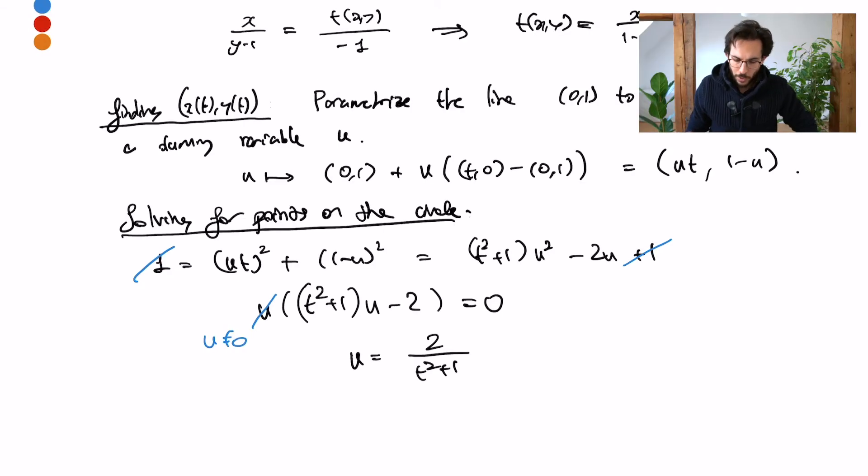Now, plugging this in back into the parameterization for my line I find the x and y coordinates. So I've denoted them by x(t) and y(t), so they are ut so 2t over (t squared plus 1) and 1 minus u so (t squared minus 1) over (t squared plus 1) and therefore I have solved for x(t) and y(t).